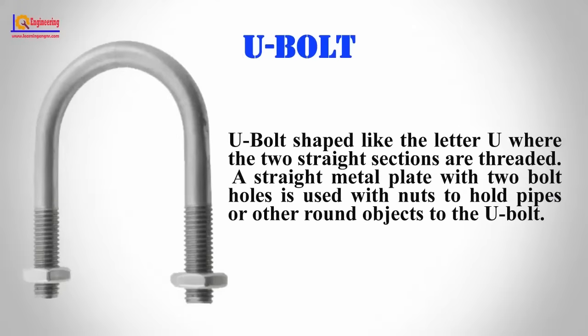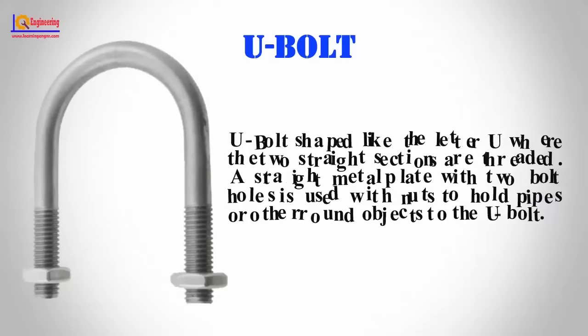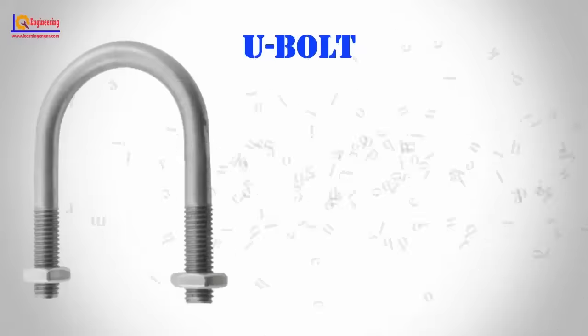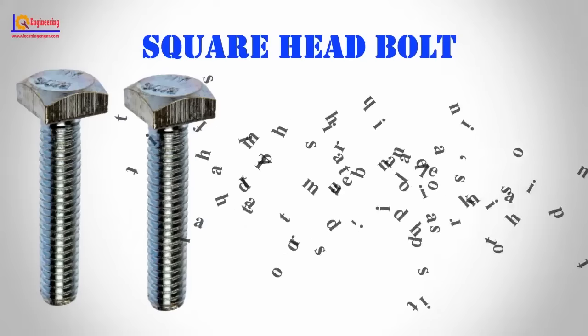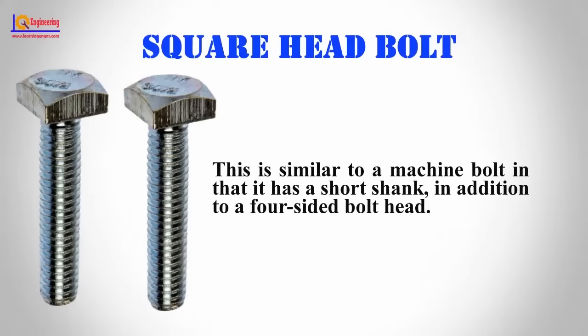U-bolt: A U-bolt is shaped like the letter U, where the two straight sections are threaded. A straight metal plate with two bolt holes is used with nuts to hold pipes or other round objects to the U-bolt.